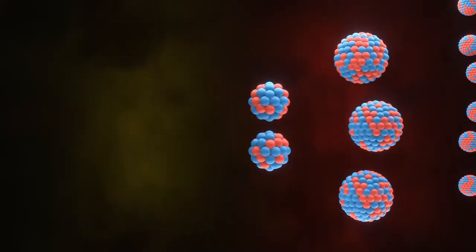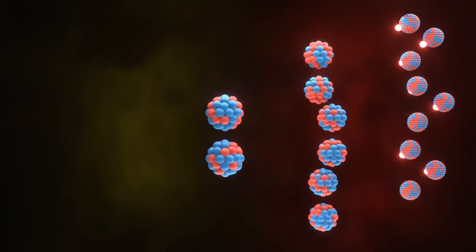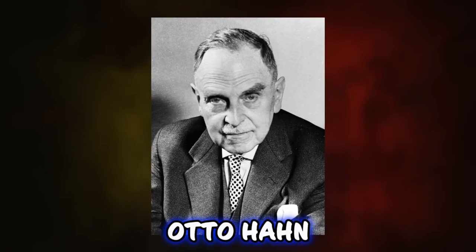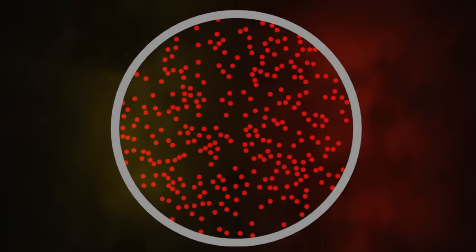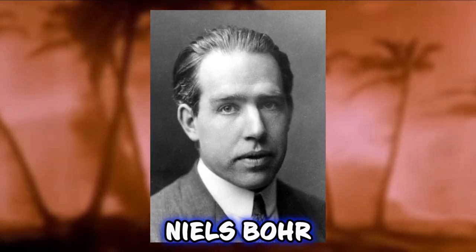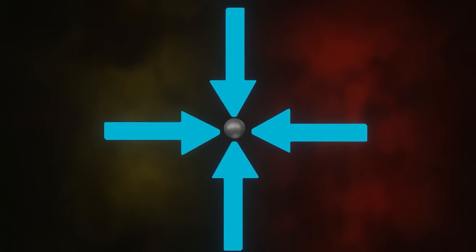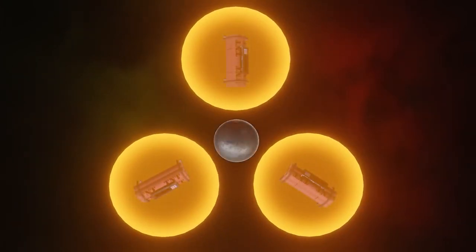Fermi's revelations paved the way for the discovery of slow neutrons and new elements beyond the periodic table. Building upon Fermi's groundwork, German scientists Otto Hahn and Fritz Strassmann conducted experiments bombarding uranium with neutrons, leading to the identification of radioactive barium isotopes. This pivotal moment ignited a global research frenzy. At Princeton University, Niels Bohr and John Wheeler envisioned a hypothetical model of the fission process, speculating that uranium-235, not uranium-238, was responsible for fission.